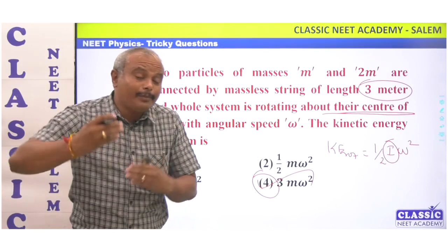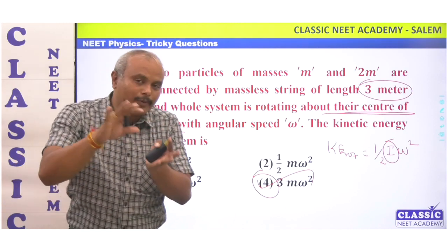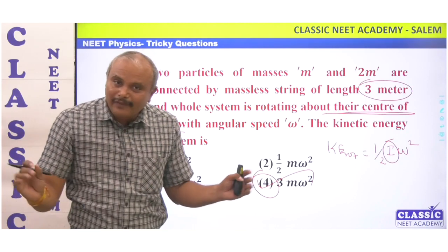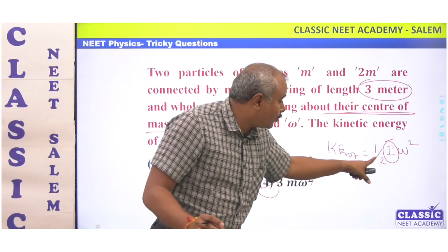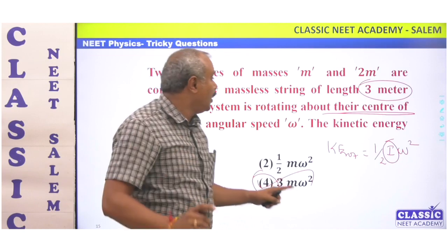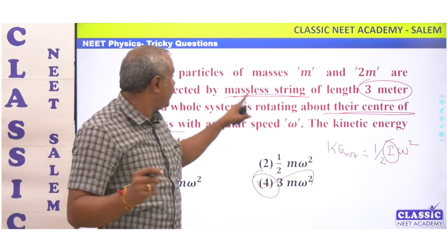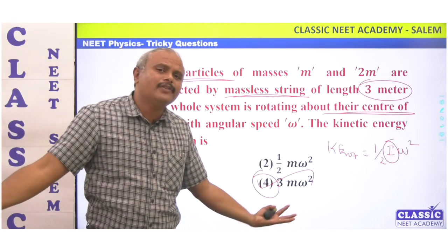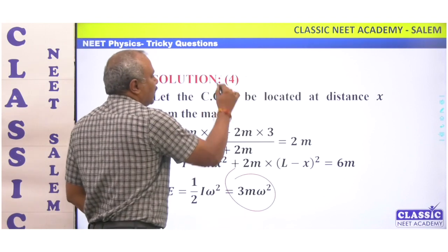This is a mixed concept. Once we know that concept, it will be easy to solve. Looking at the kinetic energy rotation of 3m omega squared — we see the moment of inertia with respect to the center of mass. The string is massless, so we only consider the two point masses. The answer is 3m omega squared, and option 4 is correct.